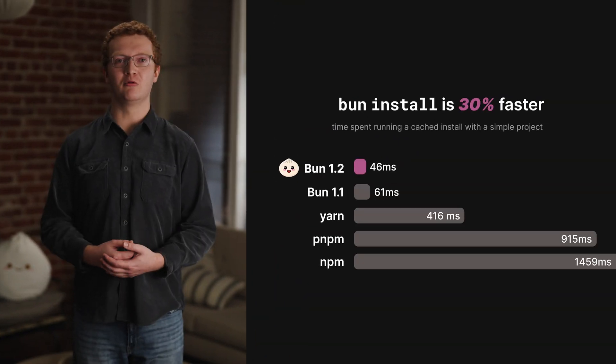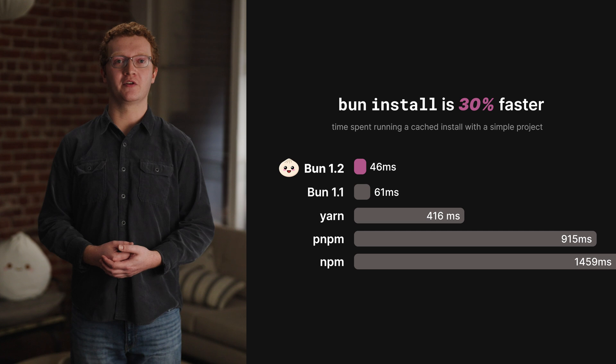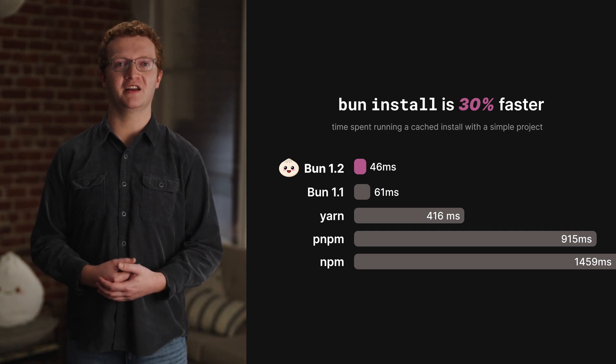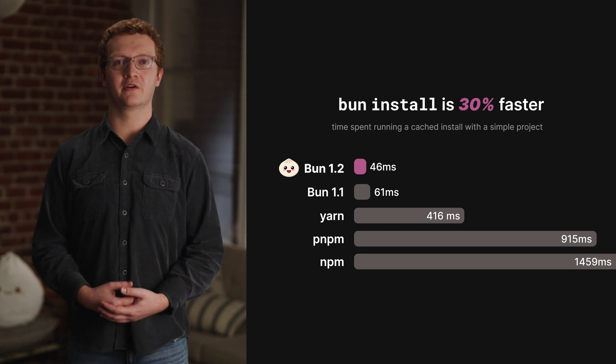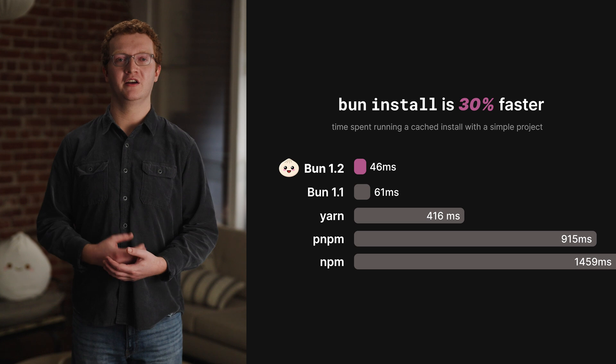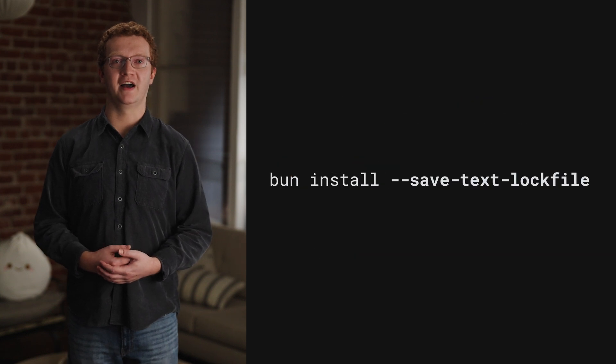Some projects start out fast then get slower as they add new features — BUN is not one of those projects. That's why we spent a lot of time figuring out how to make the text-lock file just as fast. In BUN 1.2, we made cached installs 30% faster. For new projects, BUN install will default to generating a text-lock file. For existing projects, BUN will continue to use the binary log file. To migrate to the text-lock file, you can pass the save-text-lock-file flag to BUN install.